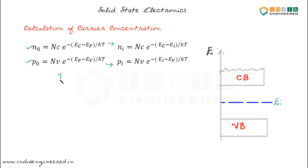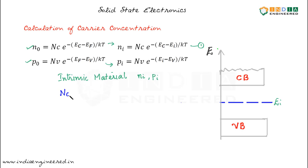In intrinsic material, we have Ni and Pi. Now we will try to write N0 and P0 in terms of Ni or Pi. From this equation, we will write Nc as Nc equal to — we will bring this exponential term to the left hand side — that is Ni into E power Ec minus Ei by Kt.